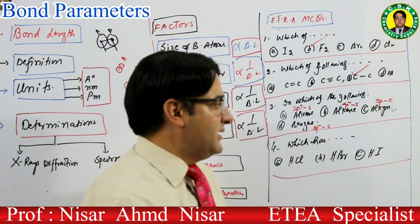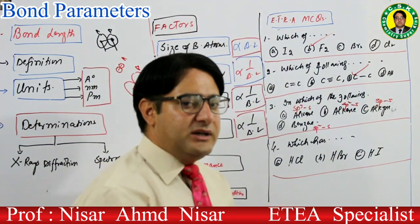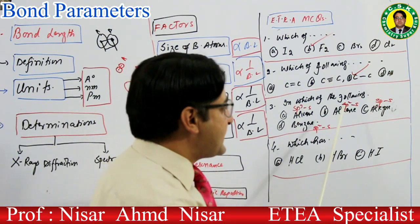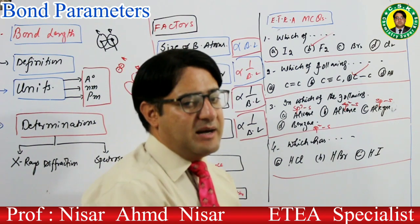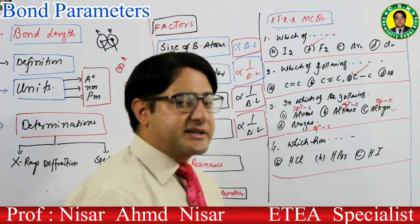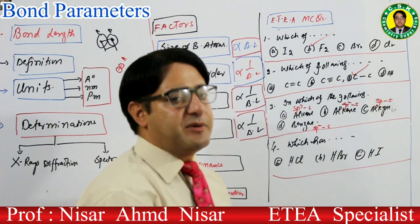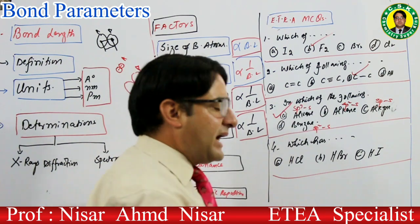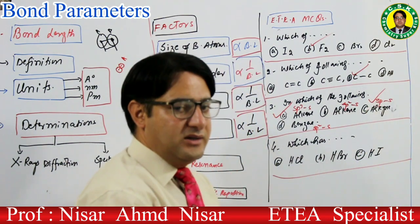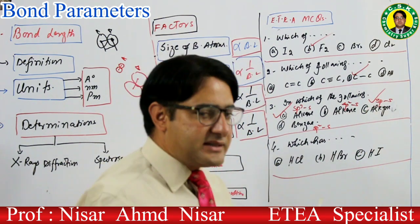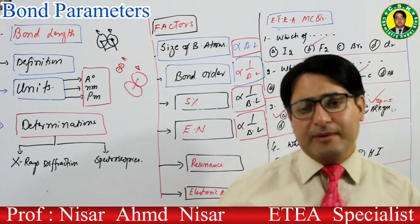Percent s character زیادہ ہوگا تو bond length کم ہوگی۔ sp3 میں s character 25%، sp2 میں 33.3%، sp میں 50% ہوتا ہے۔ تو longest C-H bond alkane کے اندر ہوگا اور shortest C-H bond alkyne کے اندر ہوگا۔ Percent s character کے ساتھ bond length کا inverse relation ہے۔